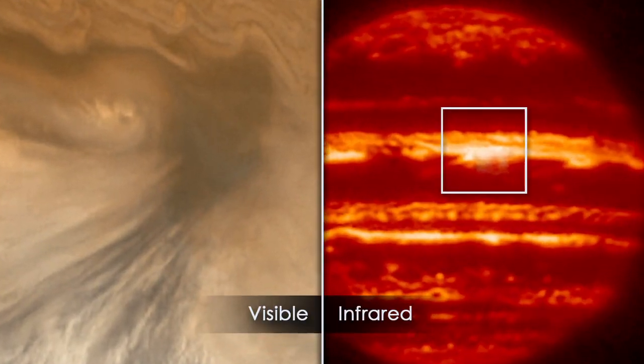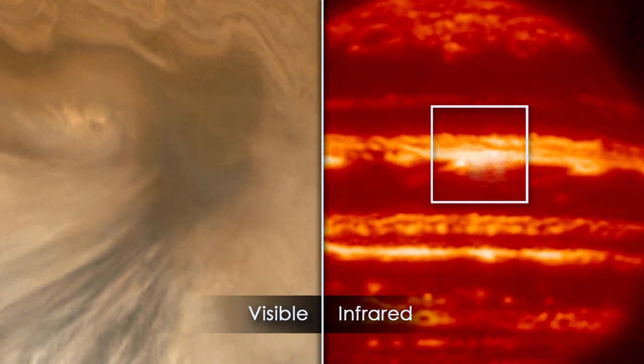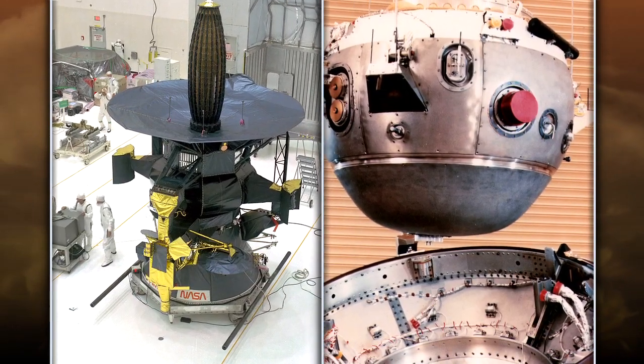So hotspots are like holes in the clouds because they appear very dark when observed in visible light, but in the infrared light they appear very bright. This indicates that we're seeing deeper down into warmer layers of the atmosphere.